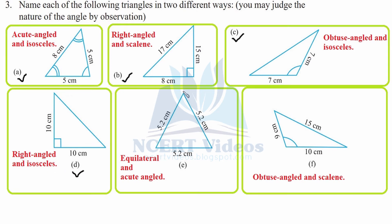Part e: All the sides are equal at 5.2 centimeter, therefore it is equilateral. All angles measure less than 90 degrees — in an equilateral triangle they always measure 60 degrees each since 60 times 3 gives 180. Part f is again obtuse angled, with all sides different in length — 10, 15, and 9 — therefore it is obtuse angled and scalene. That was question three.